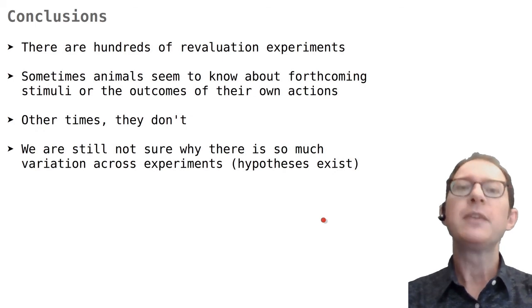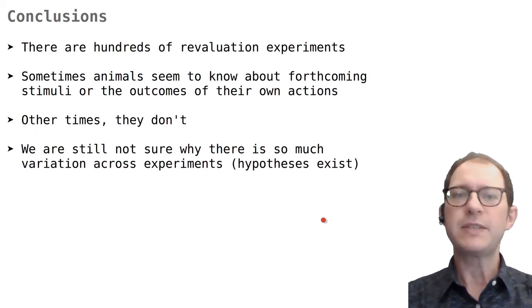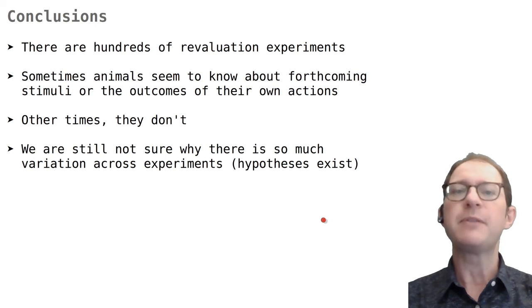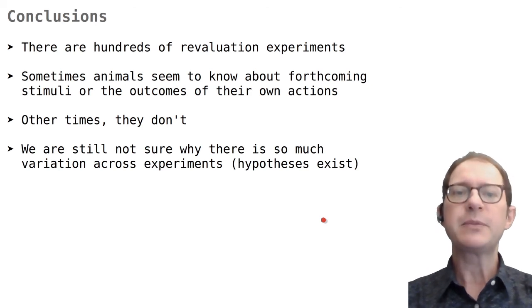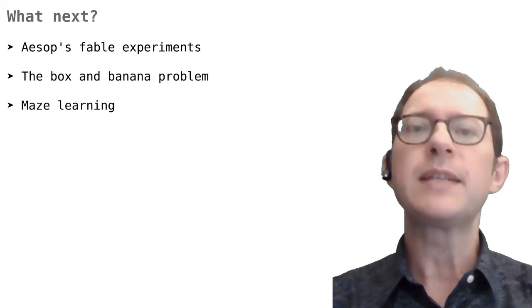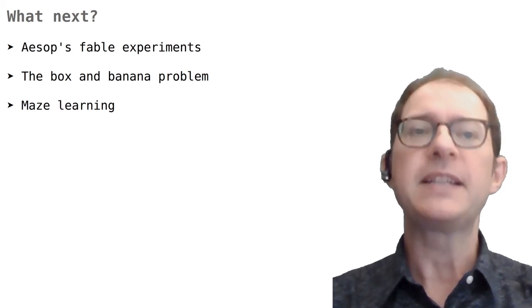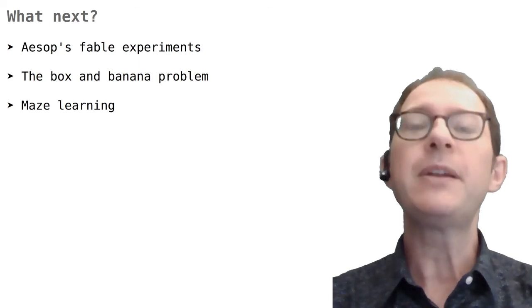Let us summarize what we have seen. The revaluation experiment is how psychologists ask whether animals imagine what's going to happen — be it a stimulus beyond their control as in Pavlovian conditioning, or the outcome of their own action as in instrumental conditioning. Different experiments give different results: sometimes animals seem to know what happens, sometimes they don't, and sometimes the effect is small or ambiguous. As scientists, we are still not sure why different experiments give different results, even when they seem similar. This lesson is over — here are some suggestions of what to study next, all dealing with how sophisticated animals' ability to learn about their environment is. Happy learning to everyone!